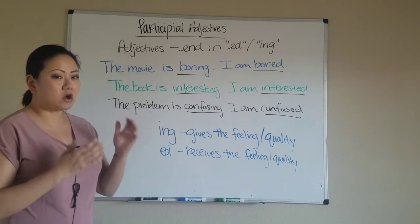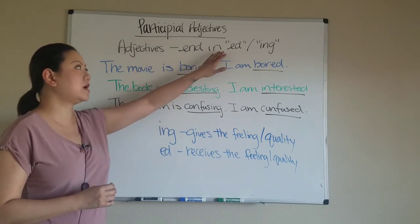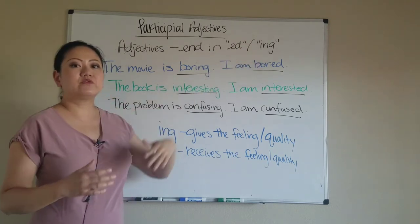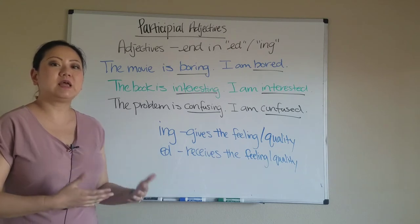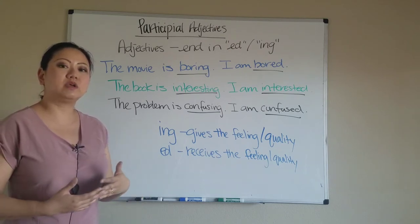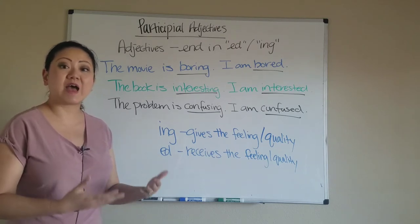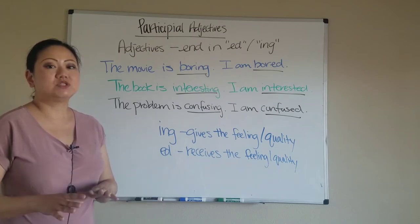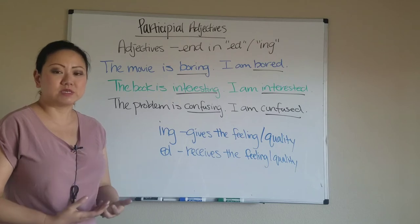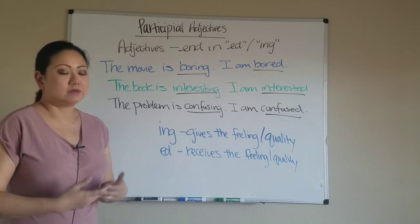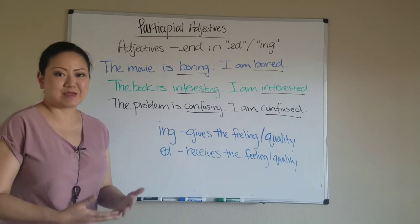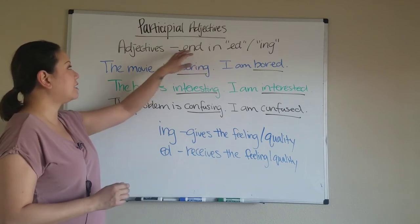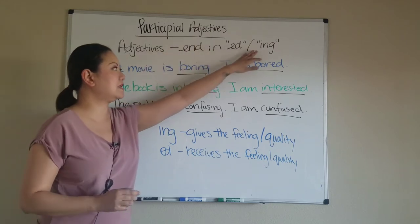Now adjectives can also look like this — they can have an ED ending or an ING ending. From your English learning you've learned that ED and ING endings are usually for verbs and action. But this has nothing to do with action — this has to do with describing a person, places, or things.